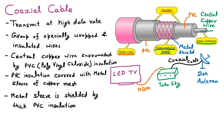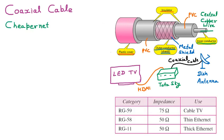The coaxial cable has two other popular names: cheapernet and thinnet. It is called cheapernet because it is very easy to install and cheap in price — installing Tata Sky, Dish TV, or any cable connection at home costs very little.